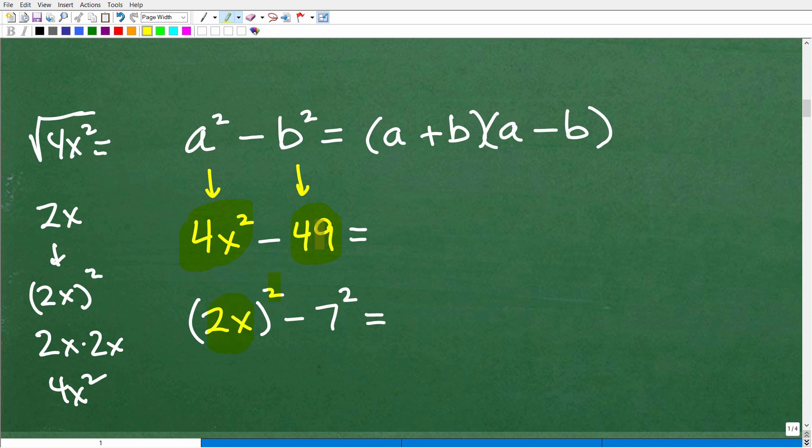So 4x squared, I can write this as 2x squared. And then 49, just take the square root of that. And here, of course, we're dealing with a nice perfect square. So this is the same thing as 7 squared. All right, so at this point, it becomes easy. We're just going to go ahead and follow the pattern.